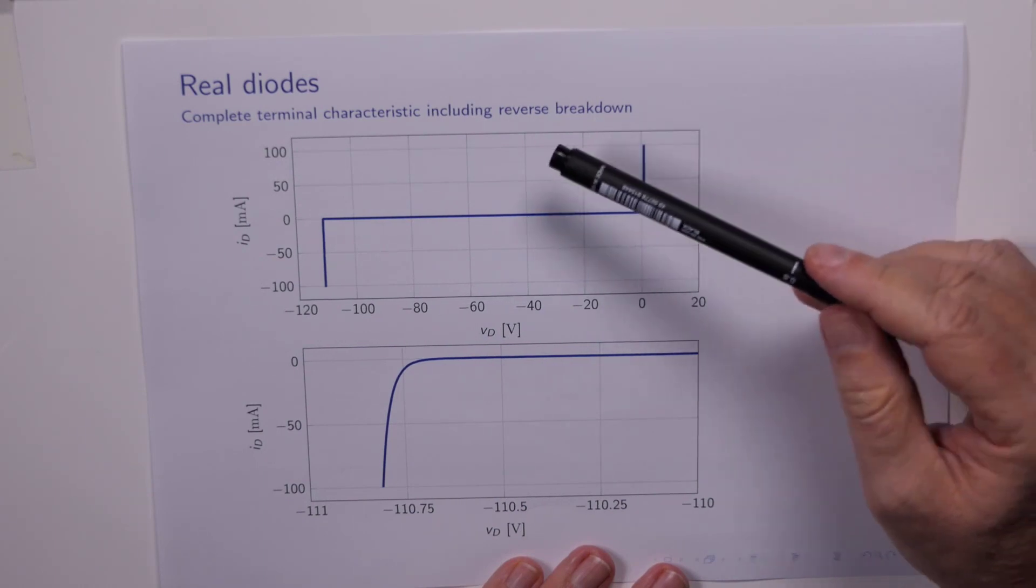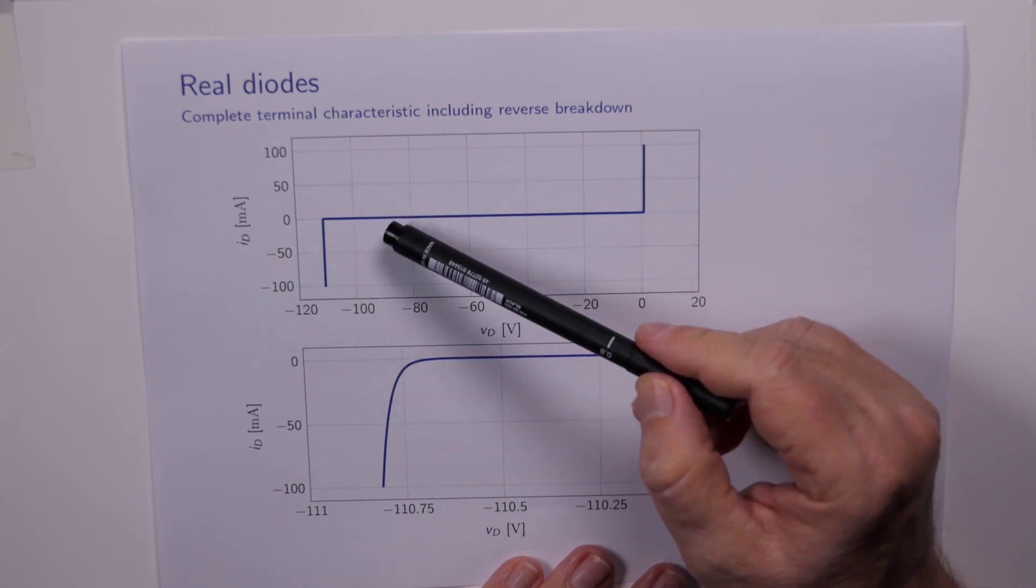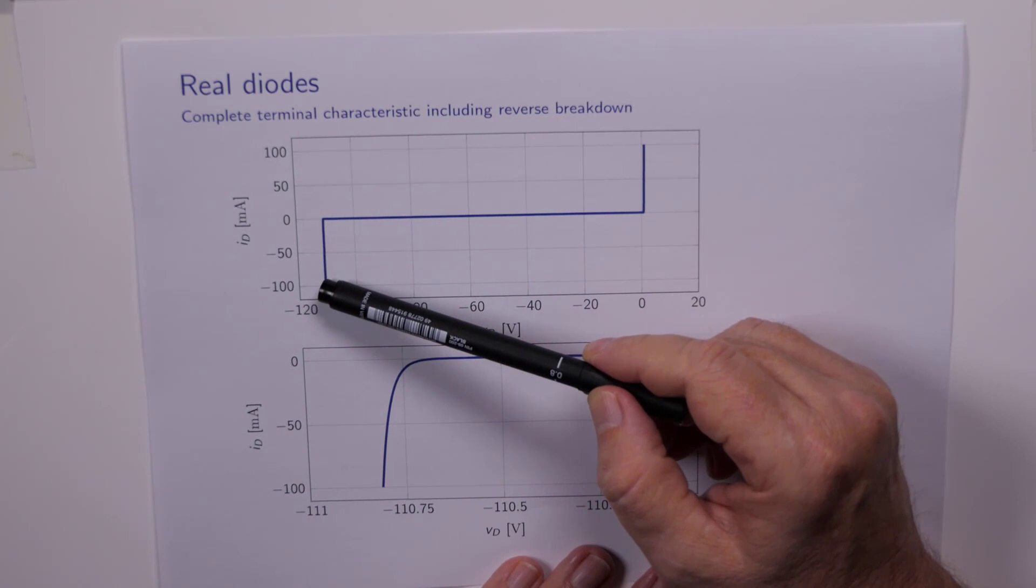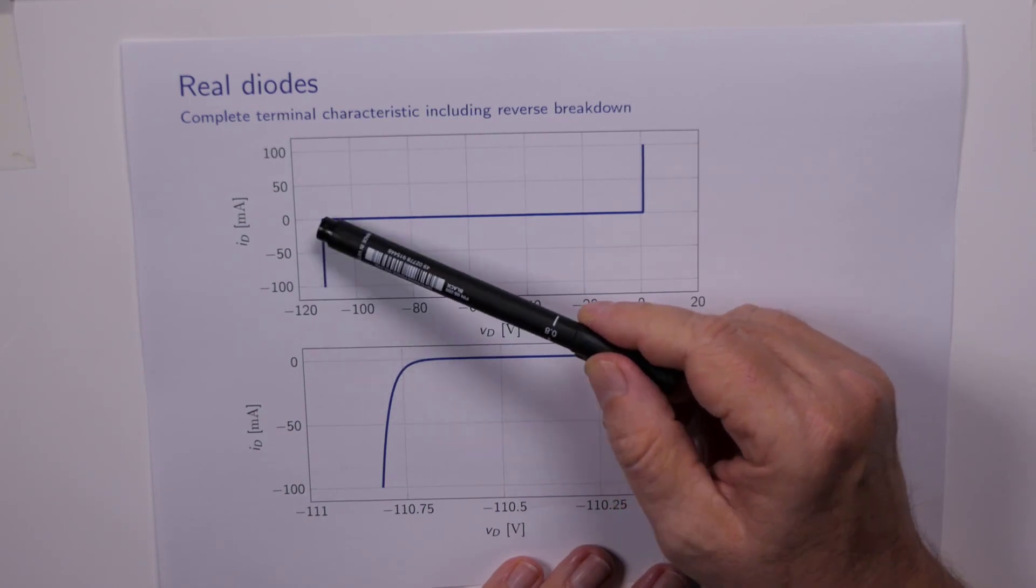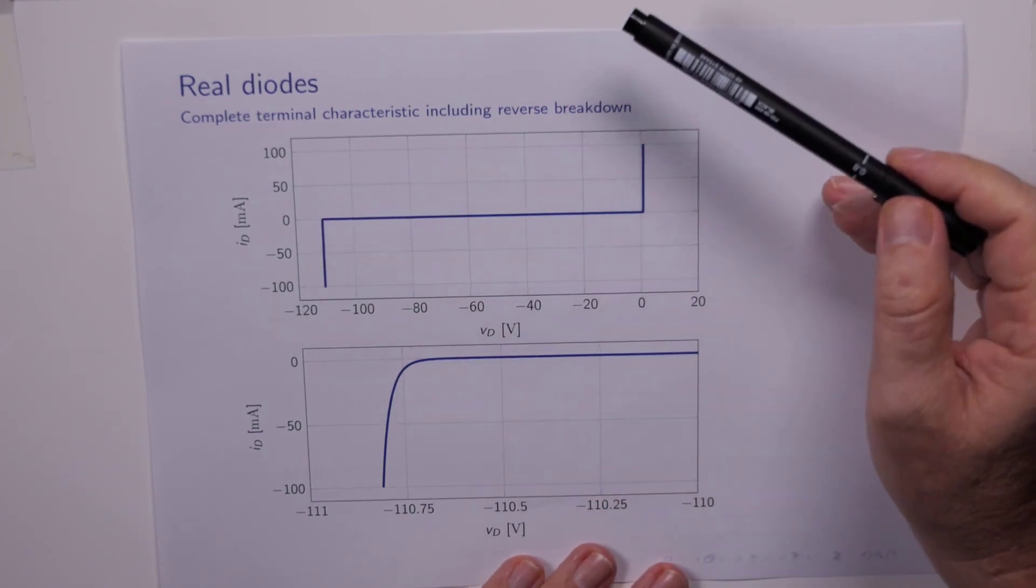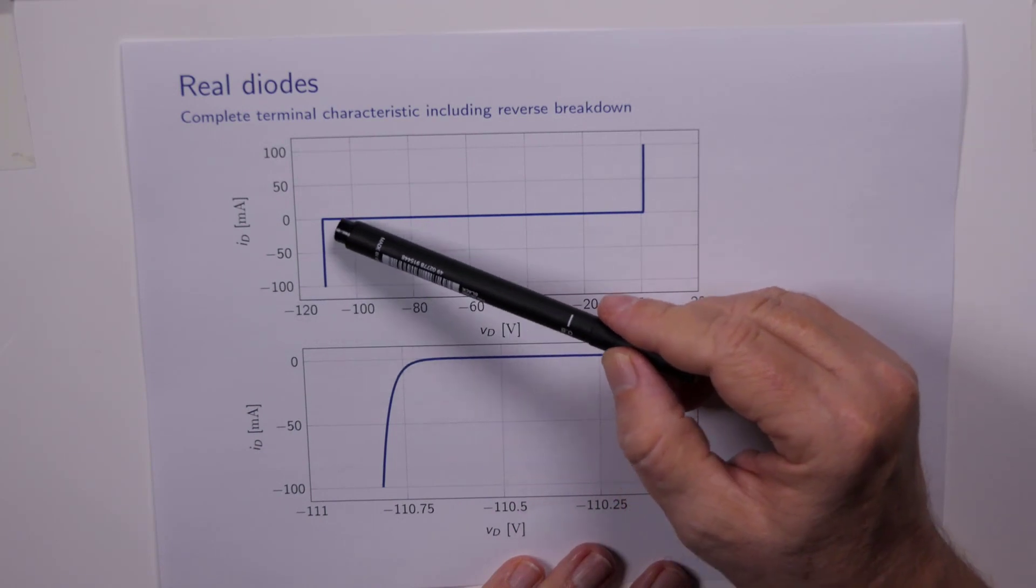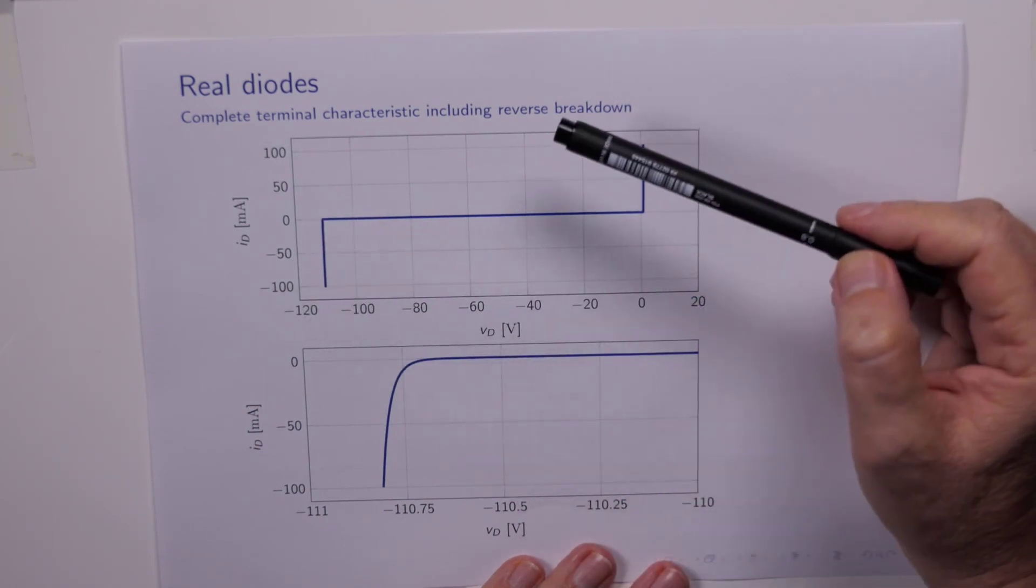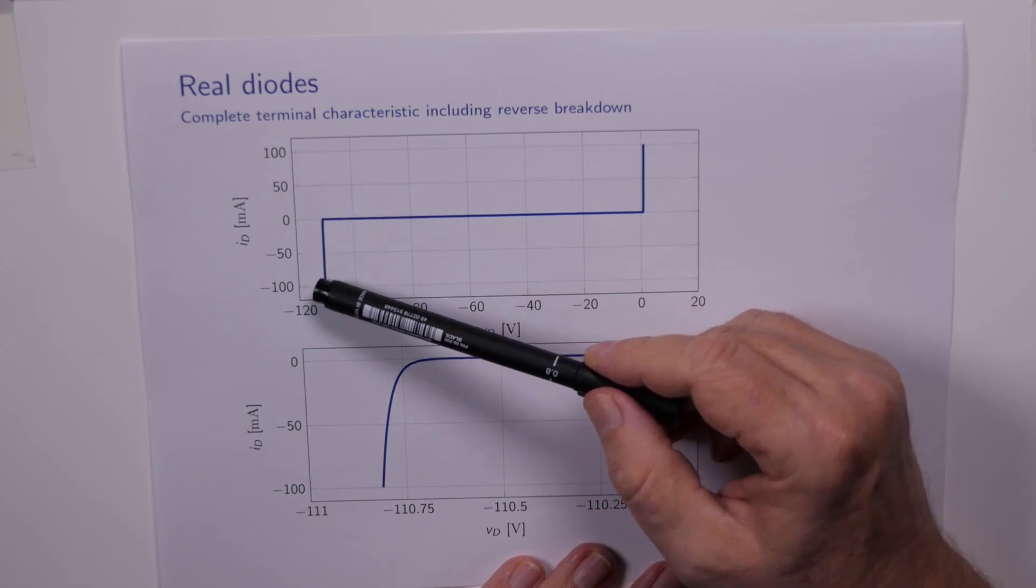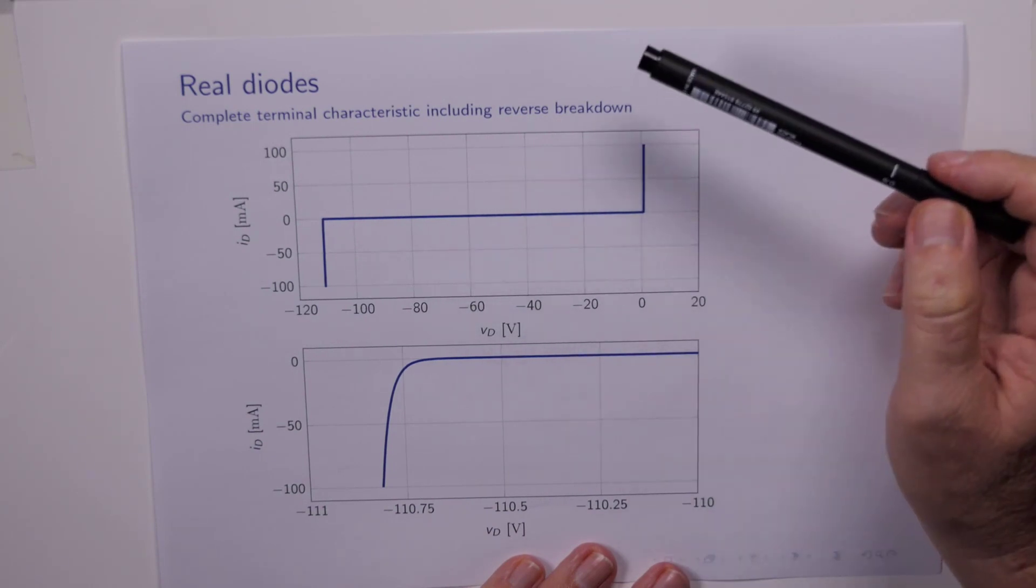However, when we zoom out like this we also see another strange behavior. When VD gets sufficiently negative, suddenly it starts conducting in the reverse direction substantially. And this is called reverse breakdown. For signal diodes or rectifying diodes, this is an undesirable state of affairs, and it's generally unrecoverable. The diode usually catastrophically fails here. The insides of it melt and it's no longer a diode.